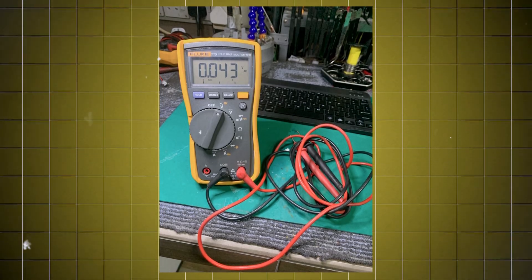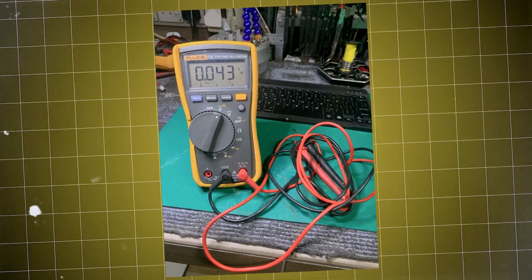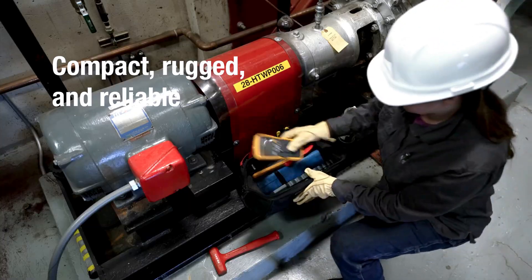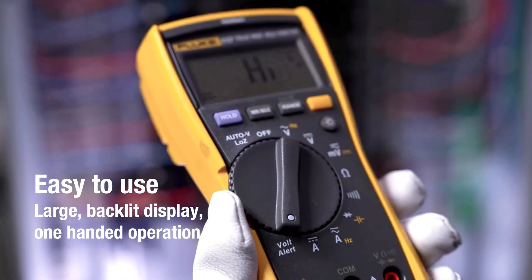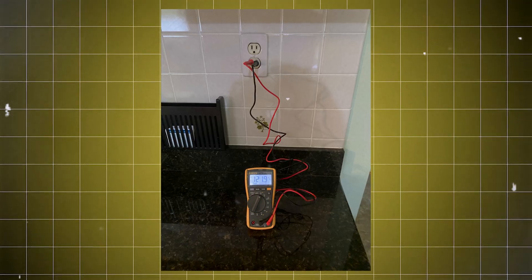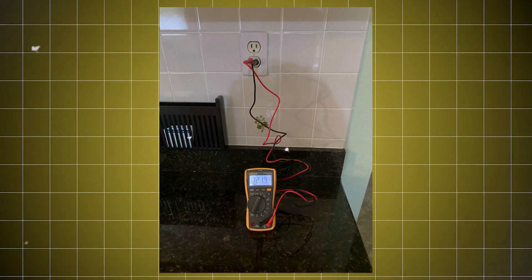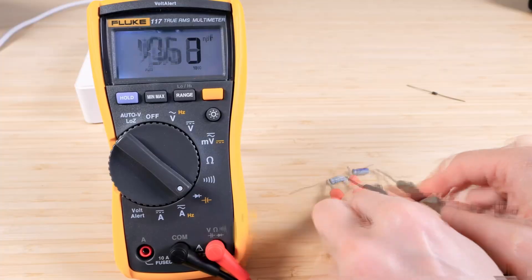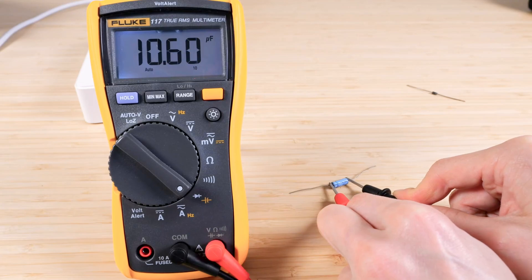Durability truly shines with this multimeter. Outfitted with a sturdy rubber case, it feels resilient in hand. You won't worry about accidental drops. For those who need reliability, this tool won't disappoint. Fast and accurate readings make this model a standout. Real users appreciate the swift results, allowing for quick troubleshooting.